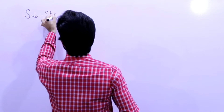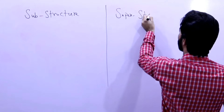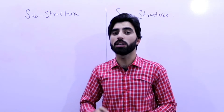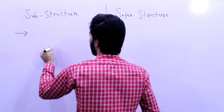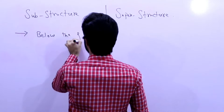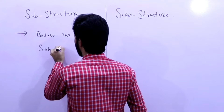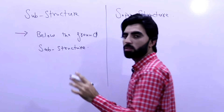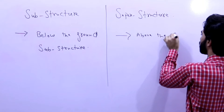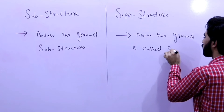Both substructure and superstructure are the main parts of a building. Substructure is the part of the building that is below the ground level. The part of the building which is above the ground is called superstructure.